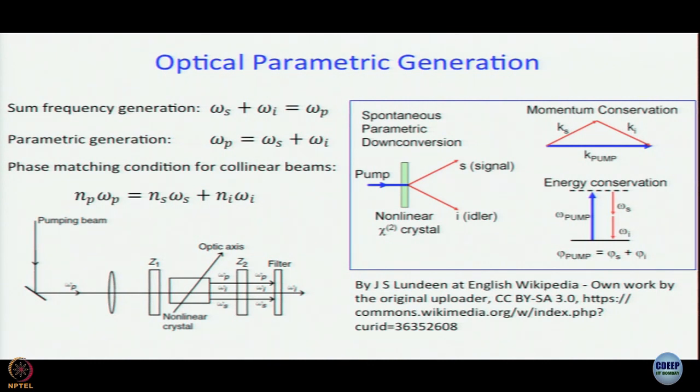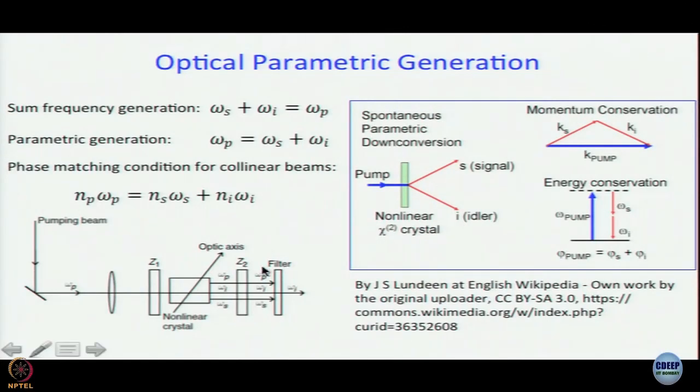We said that sum frequency generation is where two photons of smaller energy join up in a nonlinear optical medium to produce a photon of higher energy. Optical parametric generation is exactly the opposite where a photon gets split into two constituent photons, obviously of smaller energies. When we write omega_p equals omega_s plus omega_i, the problem is that there can in principle be infinite number of omega_s and omega_i combinations that would add up to give omega_p.